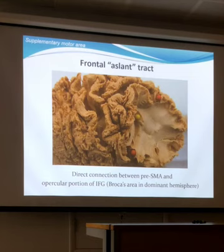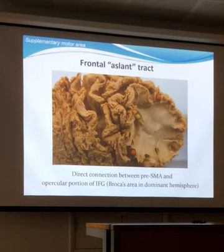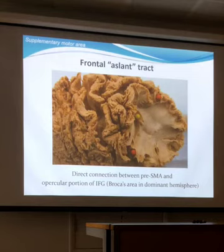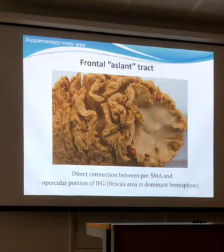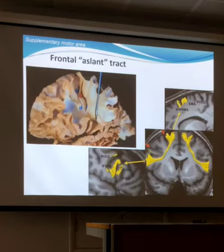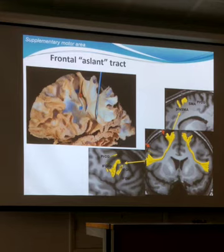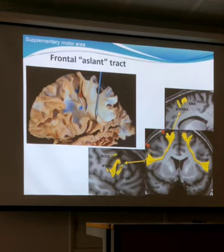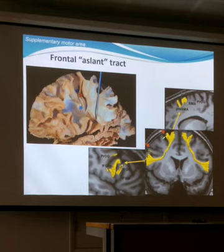Going deeper, we identified a vertically oriented longitudinal tract going from the junction between the SMA proper and the pre-SMA down to the opercular portion of the inferior frontal gyrus — which in the dominant hemisphere represents the classically described Broca's area. These fibers run deeper to the SLF. This tract has been given the name 'frontal aslant tract' because of its curvilinear direction, and it has been described and confirmed by tractography. It goes from the pre-SMA/SMA proper region down mainly to the opercular portion of the inferior frontal gyrus.